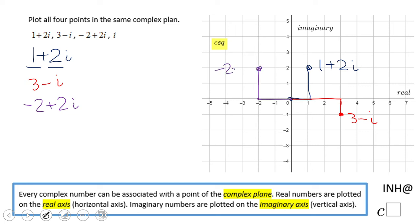We have one more last one, which is i. And i, we have 0 plus 1i if you want. That means we're going to go only 1 up right here. This is i.